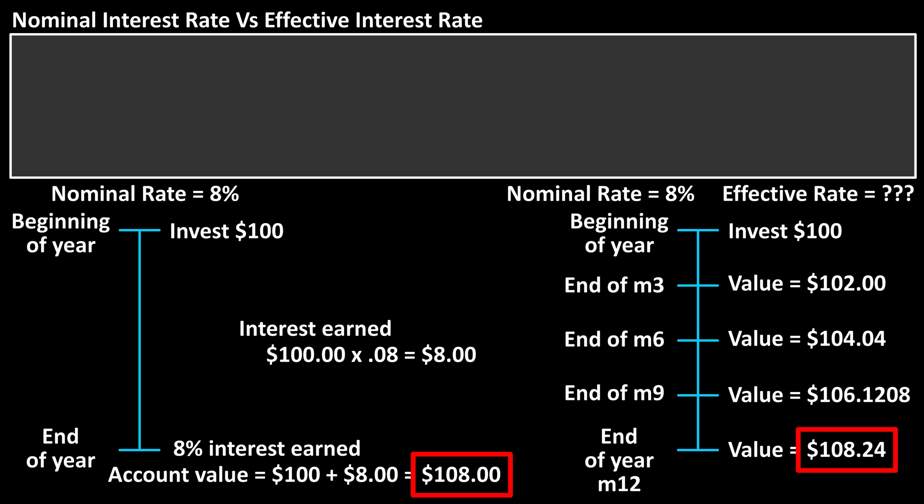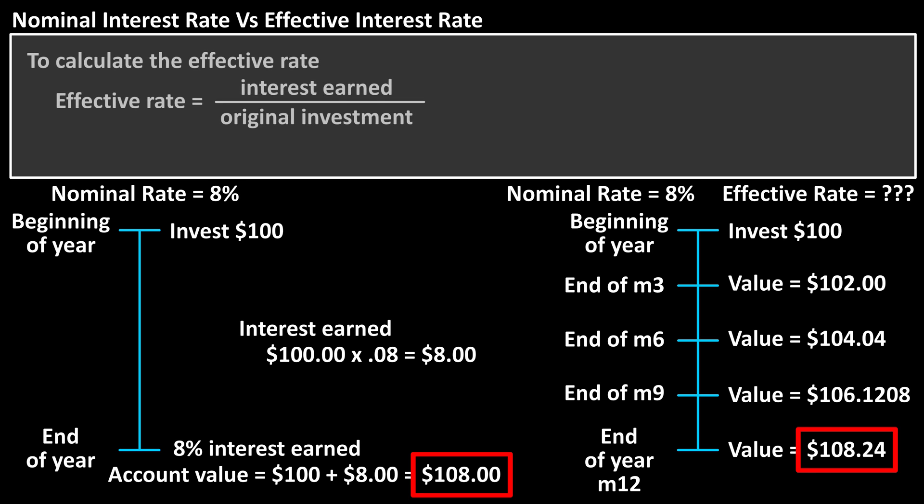To calculate the actual or effective rate of interest, we divide the interest earned by the original investment. For example 1, we have $8 divided by $100, which equals 8%.